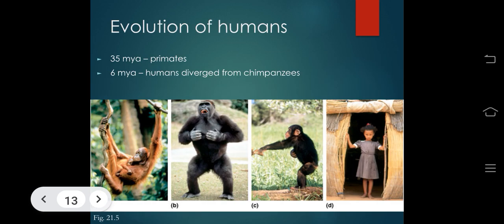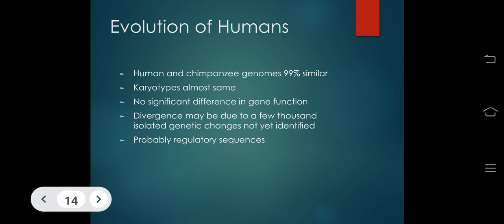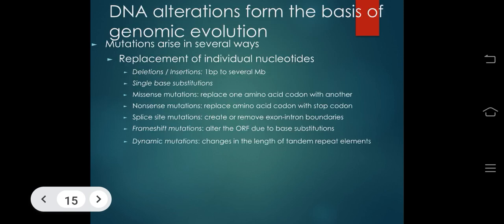Evolution of humans: about 35 million years ago primates arose, and 6 million years ago humans diverged from chimpanzees. Human and chimpanzee genomes are 99% similar, with nearly identical karyotypes and no significant differences in gene function. Divergence may be due to a few thousand isolated genetic changes — probably in regulatory sequences. DNA alterations forming the basis of genomic evolution include: mutations such as single base substitutions, missense and nonsense mutations, splice site mutations, frameshift mutations, and dynamic mutations (changes in tandem repeat length).